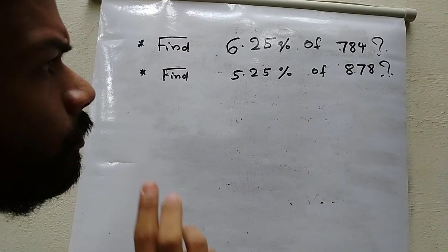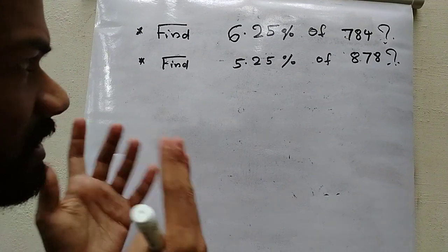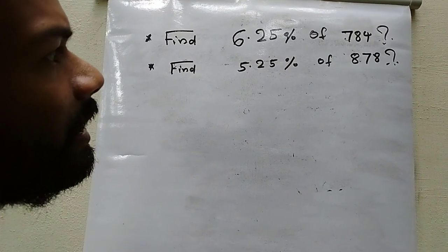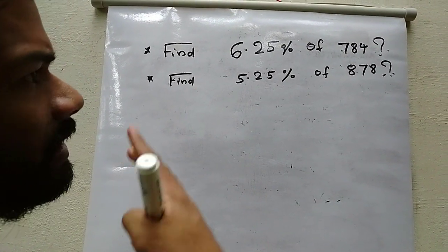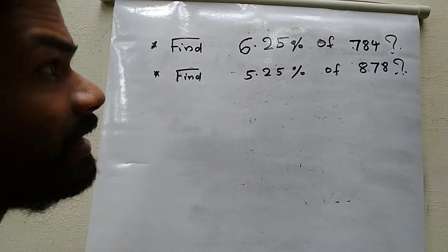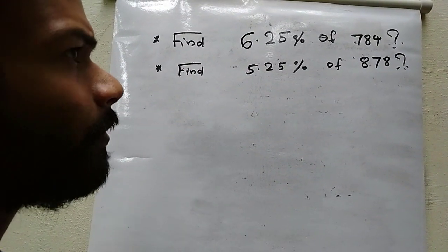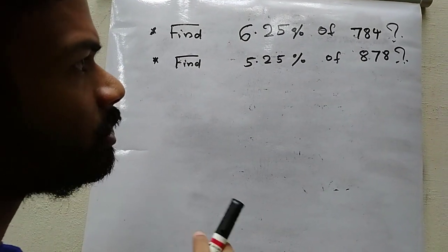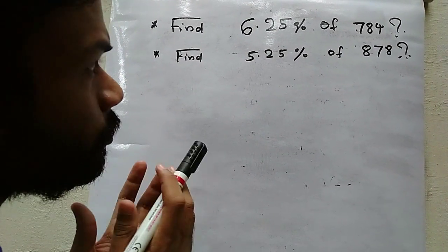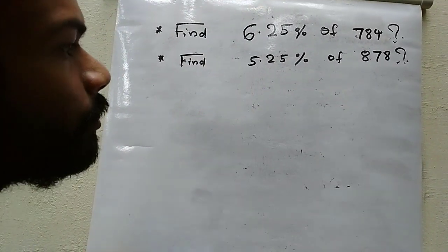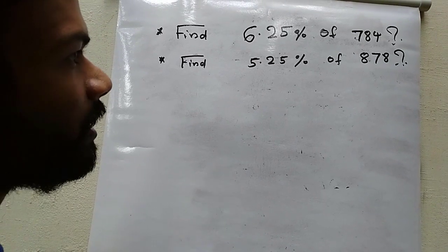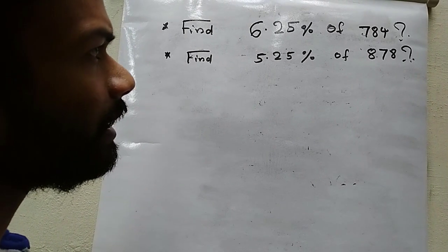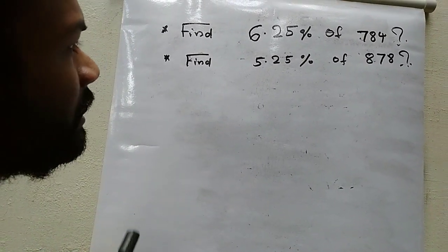Friends, here I am giving you two homework questions. Please try them at home and comment the answer in my comment box. I will clear your doubts and do the answers in the next video. The first question: find 6.25 percentage of 784. Using my trick from the previous question, you can find the 6.25 percentage of 784.